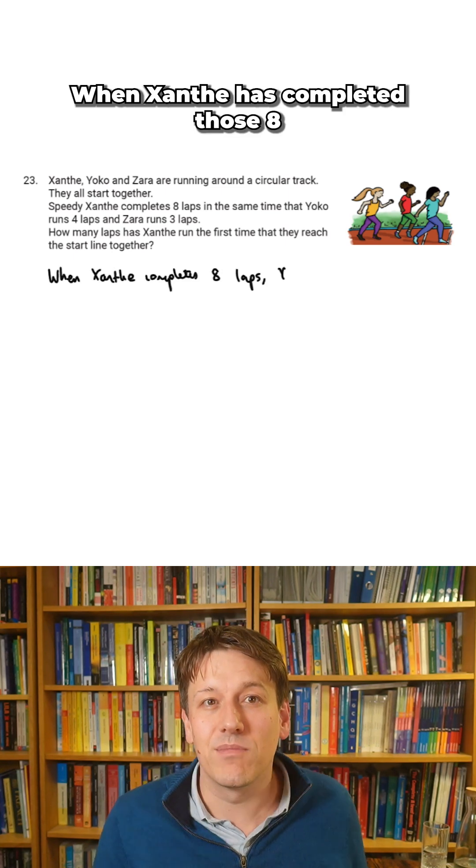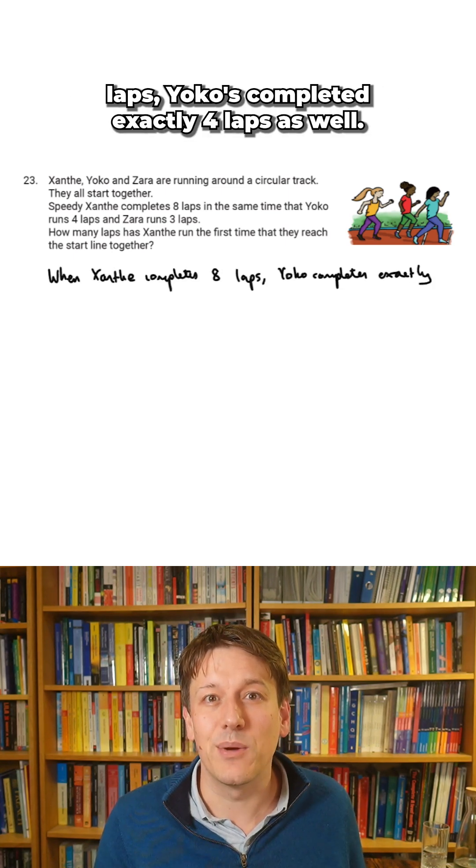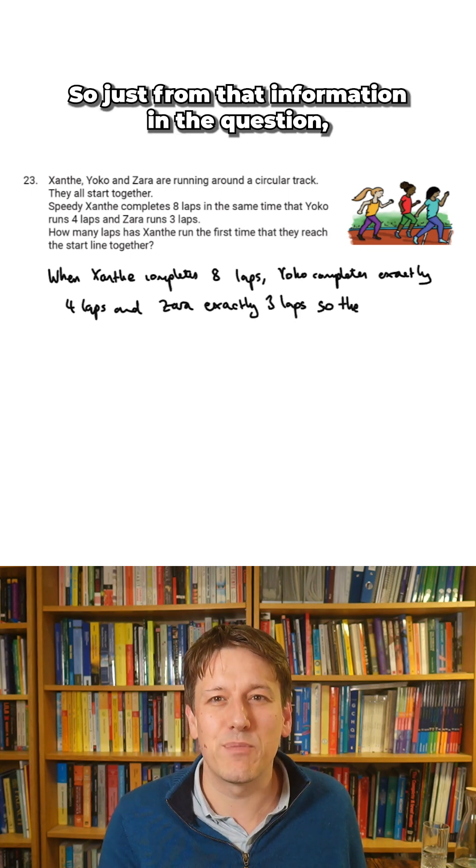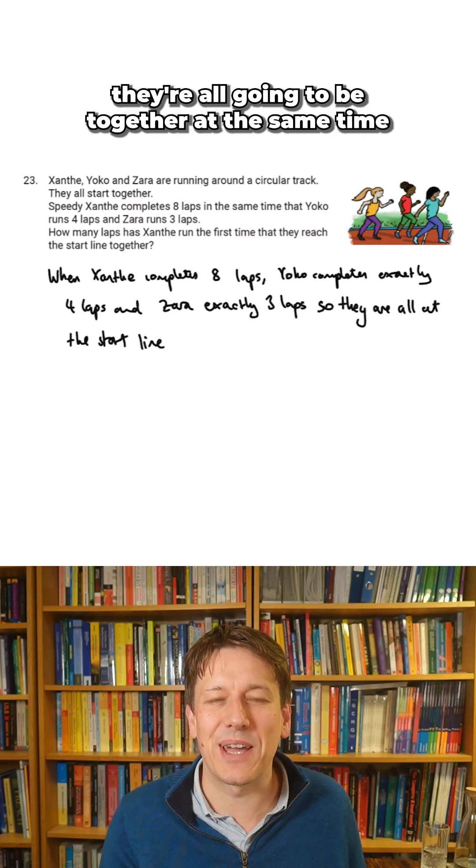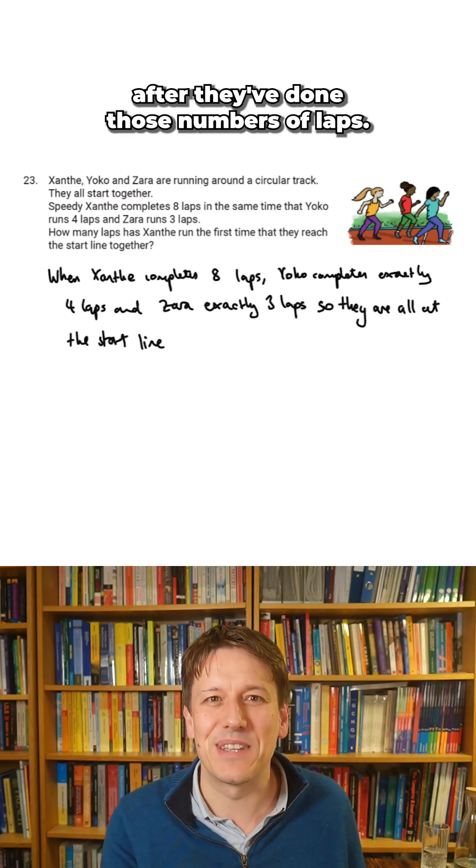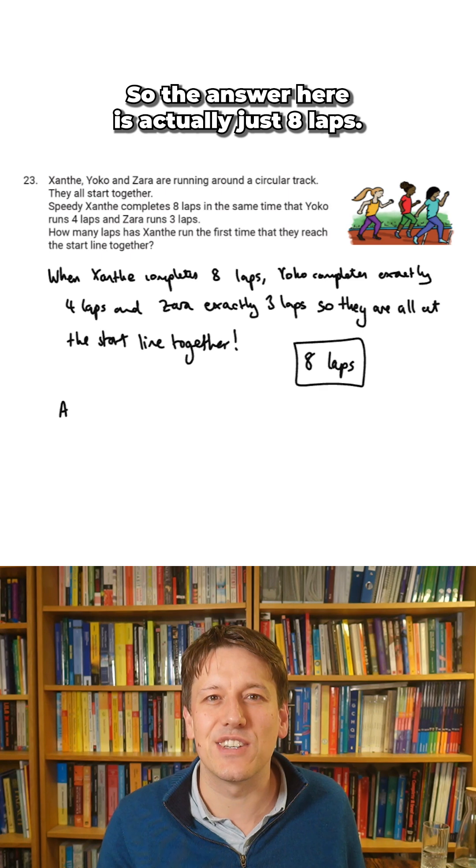The simple answer is this. When Xanthe has completed those eight laps, Yoko has completed exactly four laps as well, and Zara has also completed exactly three laps. So just from that information in the question, they're all going to be together at the same time after they've done those numbers of laps. So the answer here is actually just eight laps.